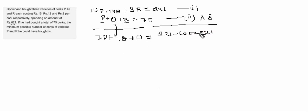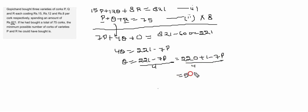So 7P plus 4Q equals 221. That means 4Q equals 221 minus 7P. That means Q equals 221 minus 7P divided by 4, which equals 55 plus 1 minus 7P by 4.